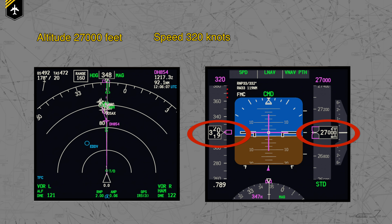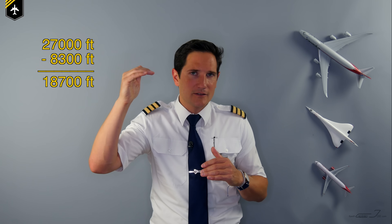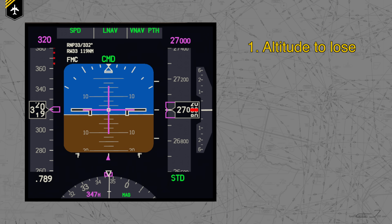Let's neglect the weight of the plane for a moment. With that data we want to calculate the distance we need to fly a continuous descent profile. The first thing we look at is the altitude we have to lose. Hamburg is at 53 feet above sea level, so we effectively have to descend 27,000 feet. Keep in mind, if your destination airport is Bogota, for example, you would have less altitude to lose as the airport is already at 8,300 feet. We cross out the last digits and divide by three: 270 divided by 3 equals 90. So 90 nautical miles is the minimum distance we need for our descent.